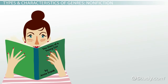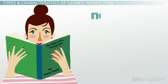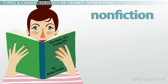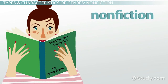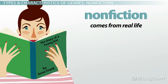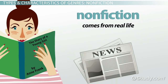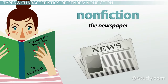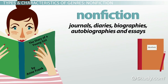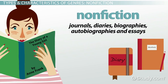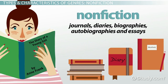A third broad literary genre is non-fiction. If fiction is fake, then non-fiction is the opposite — it comes from real life. Works of non-fiction are all based in real-world experiences. When you read the newspaper, you are reading non-fiction. Other examples include journals, diaries, biographies, autobiographies, and essays.